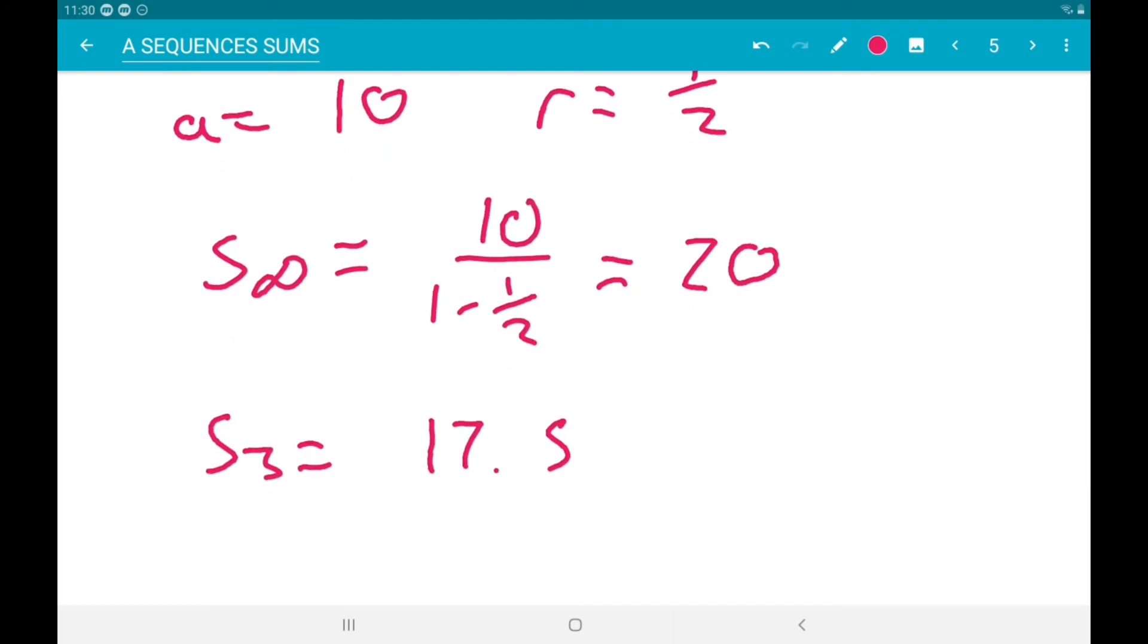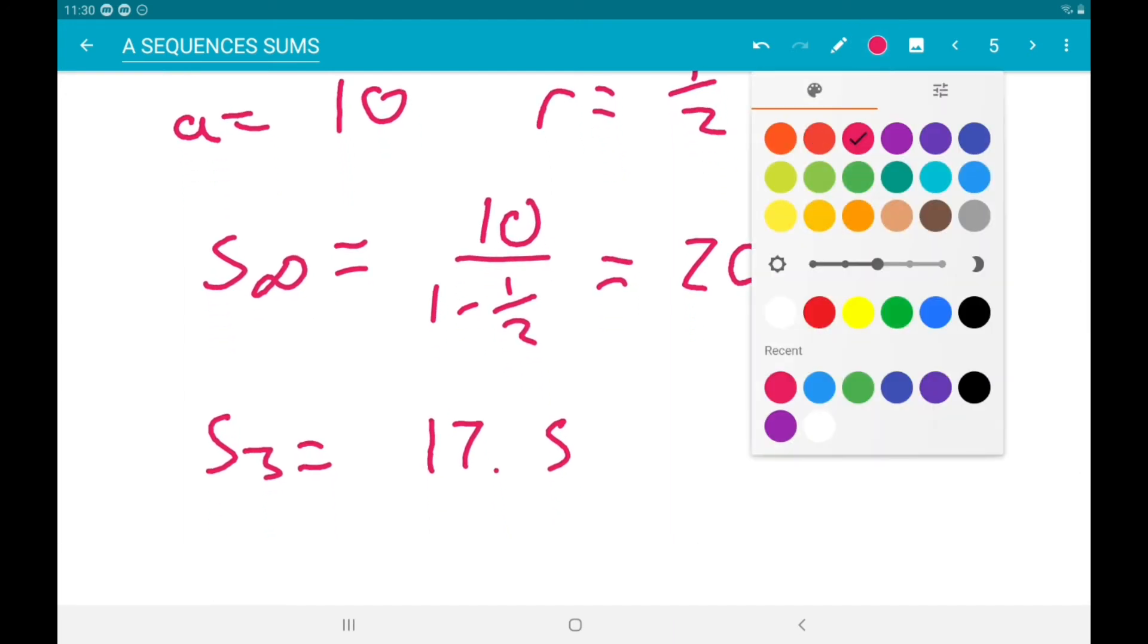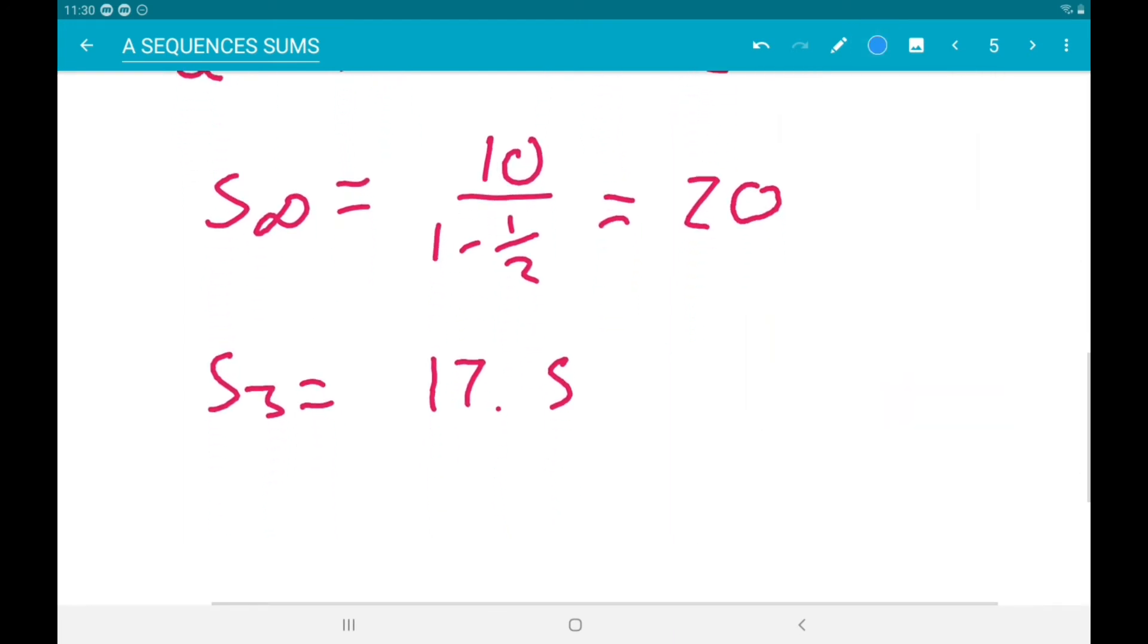So then we just need 20 minus 17.5. So we can say the sum to infinity minus the sum to 3 is 20 minus 17.5, and that is 2.5.